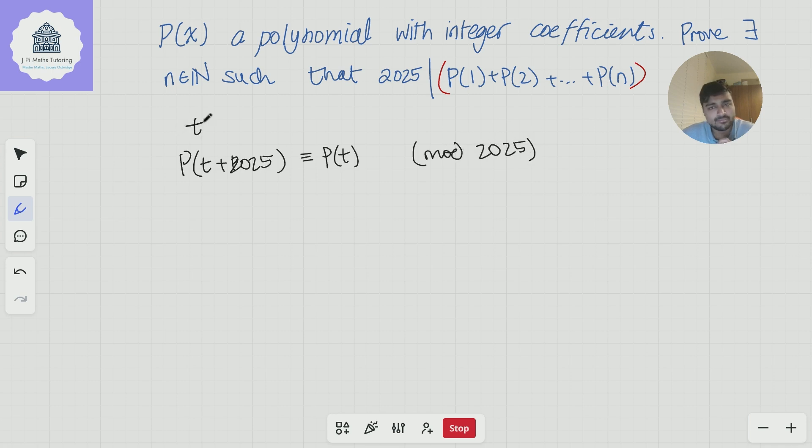So here t is just some integer. Let's make it a positive integer. So this is true, that p of t plus 2025 is congruent to p of t mod 2025. Why is this true? Well, let's just use an example and it will hopefully make a bit of sense. So let's just say p of x was x cubed plus 7x squared minus 3.